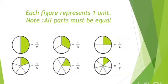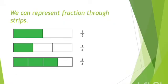We can represent fraction through strips. In first figure, a strip has 2 equal parts. 1 part is shaded. So fraction is 1 half or 1 upon 2.